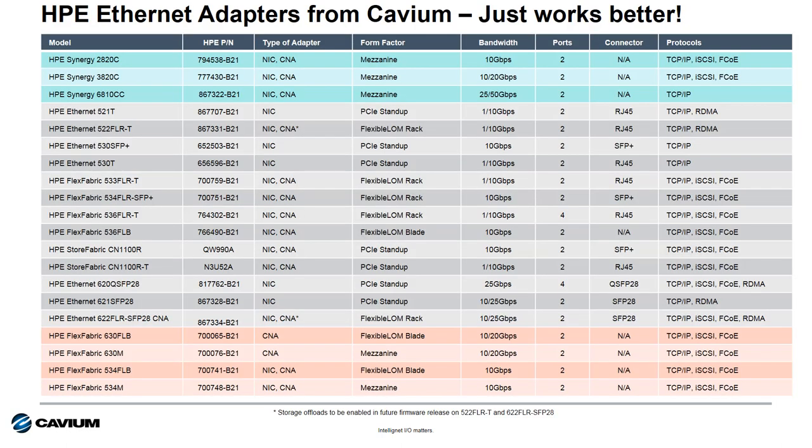Here are all of our adapters for the portfolio at HPE. We have a variety of adapters for Gen 8, Gen 9, and Gen 10. These are all based on common ASIC architecture, use common drivers, and have common management to simplify deployment across all three generations of HPE ProLiant, Blade System, and HPE Synergy servers.